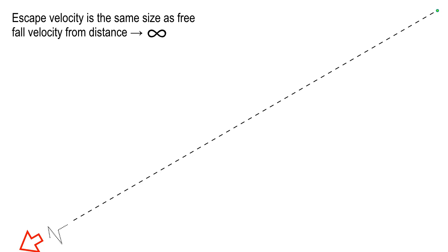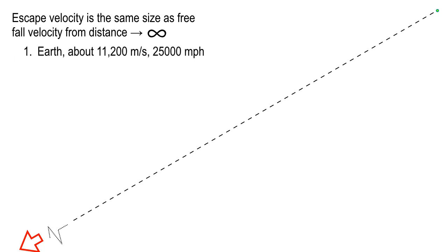This escape velocity is the same as the drop speed from infinity. And that depends on the mass and the size of the planet — that's it. How many kilograms of mass? We know approximately how many kilograms the Earth is, we know its radius, and so you could figure it out. For Earth, it's about 11,200 meters per second.